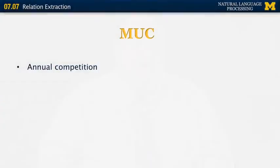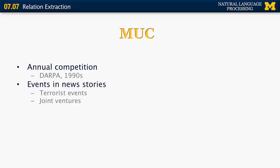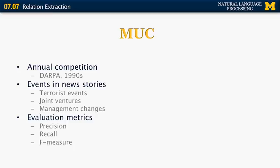One of the earliest research challenges in this area is called MUC, which stands for Message Understanding Conference. It had multiple iterations in the 90s and early 2000s. It was an annual competition about extracting events from news stories. The events were things like terrorist events, joint ventures, management changes, and so on. There was a different scenario pretty much every year. The evaluation metrics were things like precision and recall and F-measure for filling out the slots of the different fields.